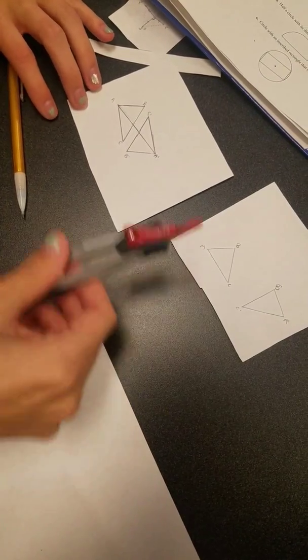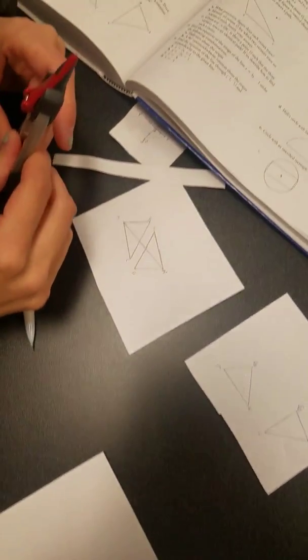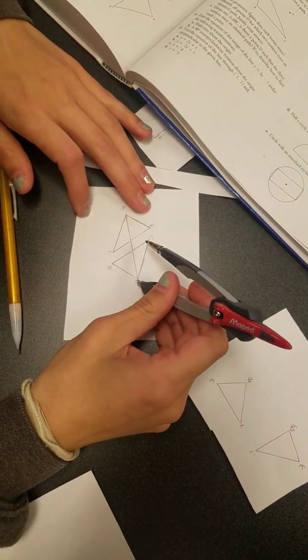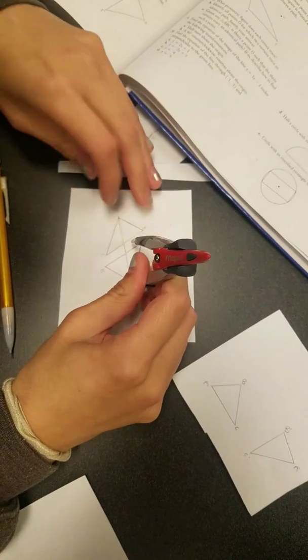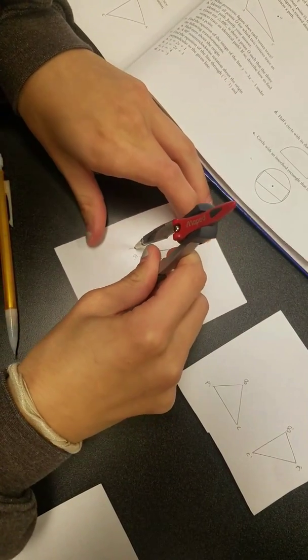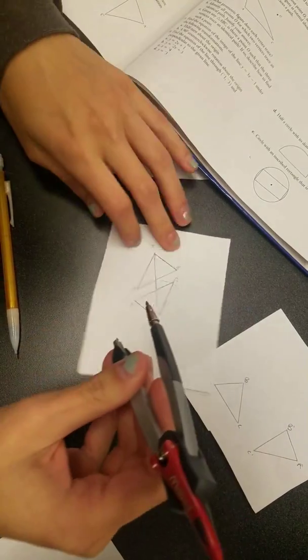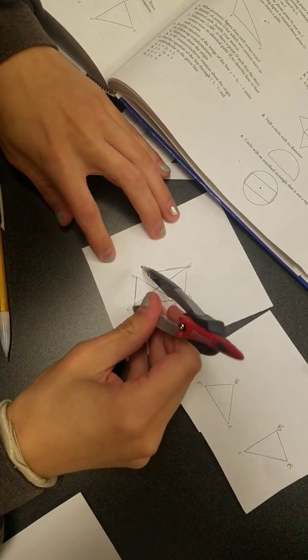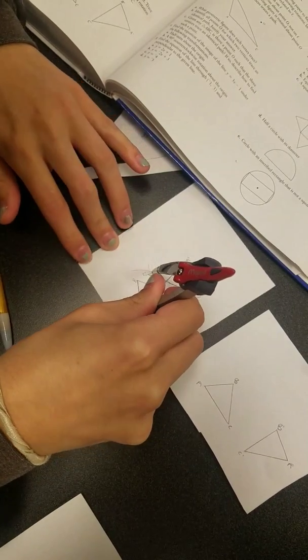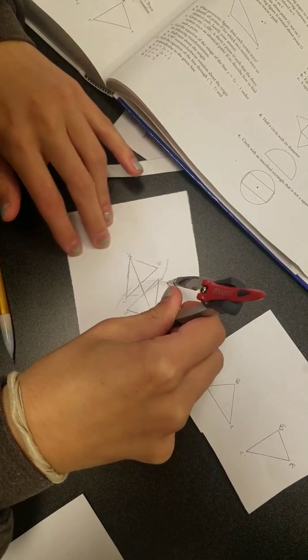Now we're going to find the perpendicular bisector by using our compass and putting it on point A prime and drawing two arcs. And then we're going to put it on the other one. So we're finding A prime and A so it doesn't matter if you start with A prime or A and you just got to draw your two arcs.